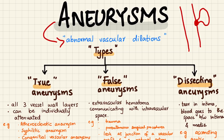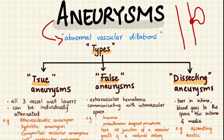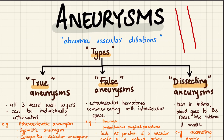Thirdly, congenital vascular aneurysms are due to congenital weakness of the vessel wall. Lastly, left ventricular aneurysm does not occur in the arterial wall but in the myocardial wall. This happens when a transmural MI — meaning all three layers of the cardiac tissue are damaged or dead — causes that area to lose its contractile strength, making it prone to aneurysm formation.